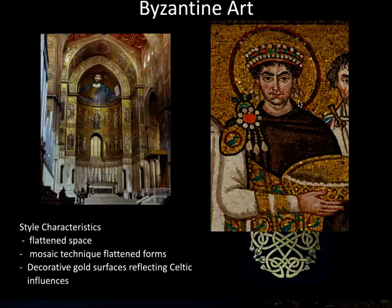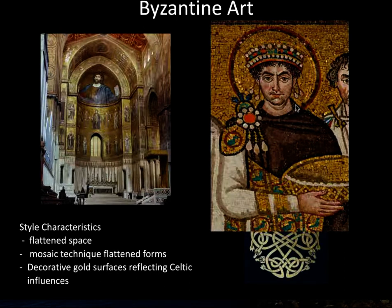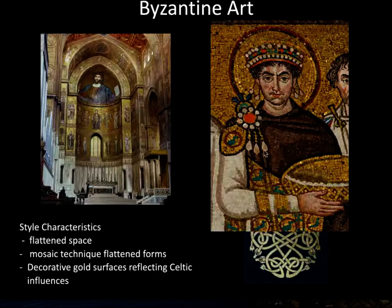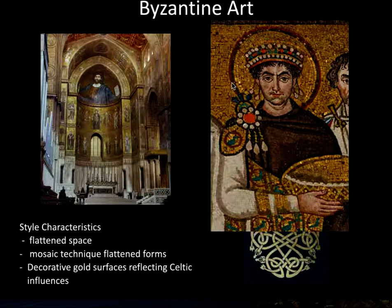This is the Emperor Justinian, from a mural in a church in Ravenna, Italy. He is depicted as a ruler with power rather than as an individual person. We see the use of gold everywhere, which is the sign of the spiritual world and spiritual authority.